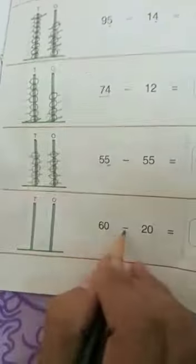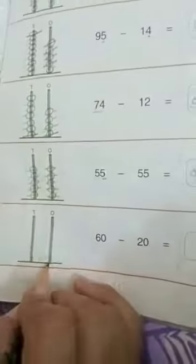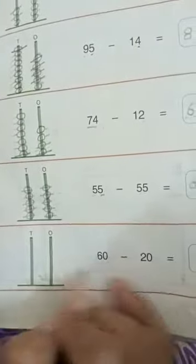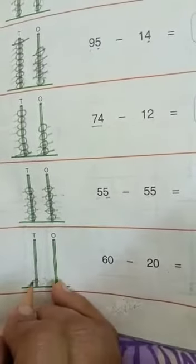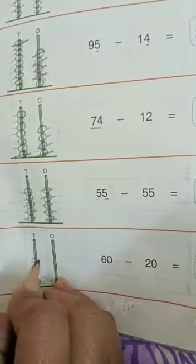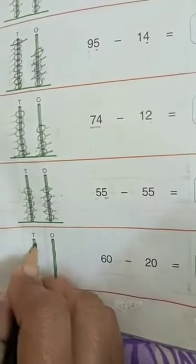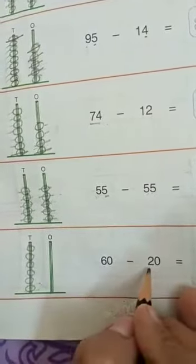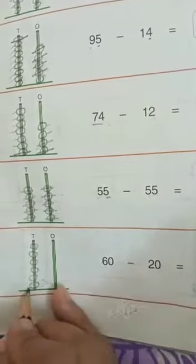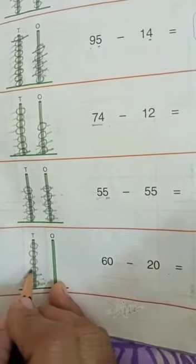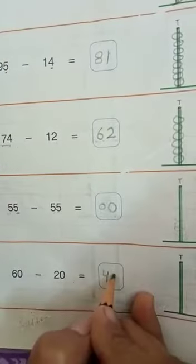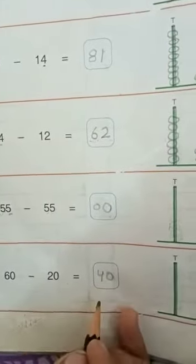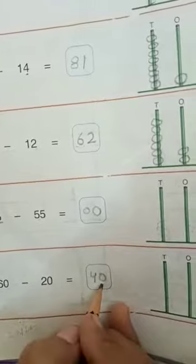Now next: 60 minus 20. For 60: 0 ones — we will not draw any bead here. Now 6 tens: 1, 2, 3, 4, 5, 6. Now we have to take away 2 tens: 1, 2. How many 10's are left? 1, 2, 3, 4. 4 tens. And the 1's is 0. The answer is 40.